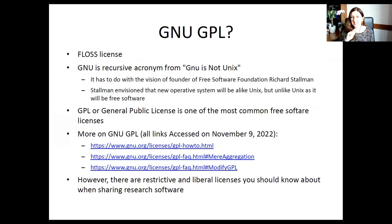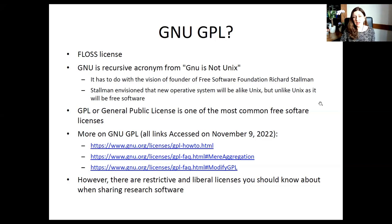The first very successful and currently most widespread license of the free software world is the GNU GPL. GNU is a recursive acronym: GNU stands for 'GNU is Not Unix.' It has to do with the history of how the Free Software Foundation was founded — they wanted to make a new operating system that would be like Unix but unlike Unix because it would be free software. GPL stands for General Public License. You've probably heard of Linux — this was the vision: today Linux is the most popular operating system, running on almost all world servers and many personal computers.